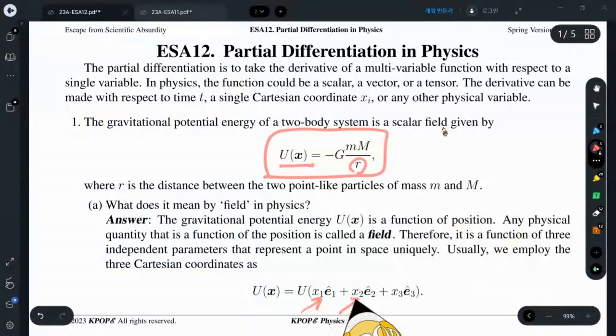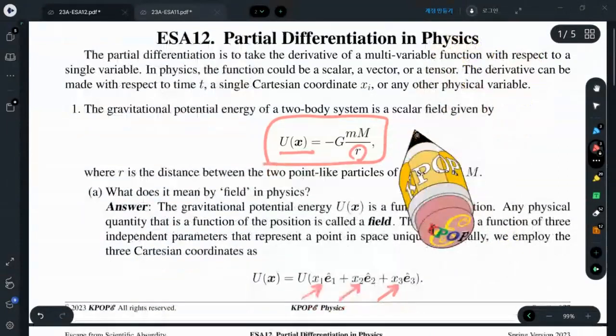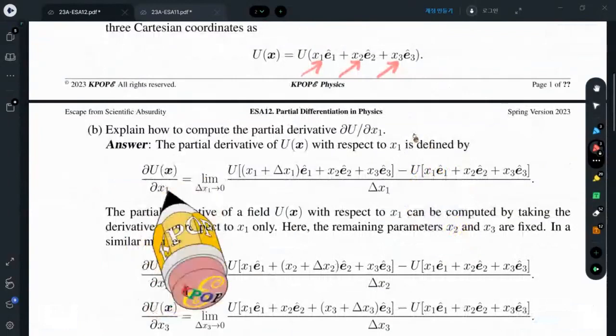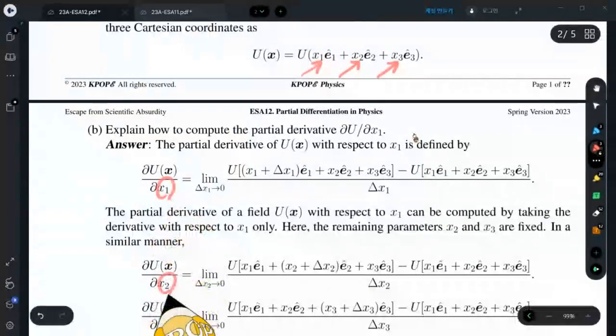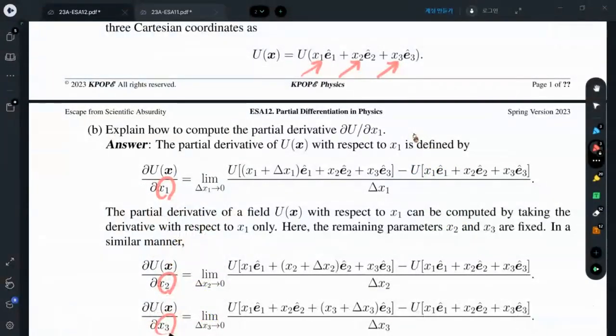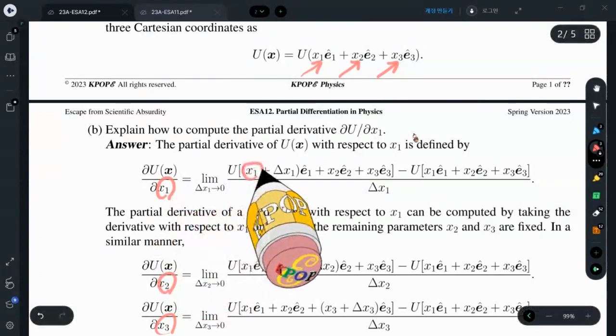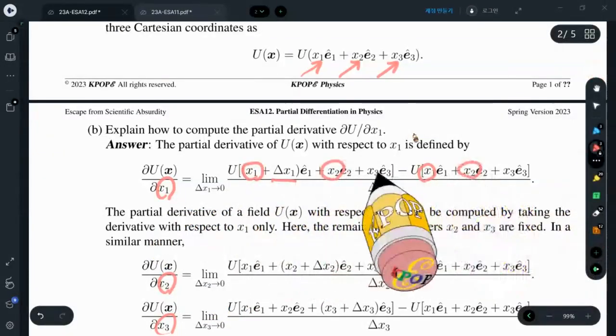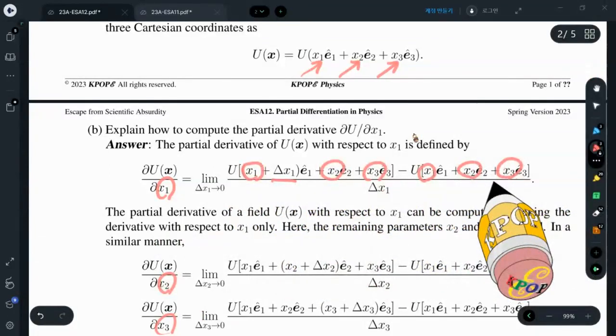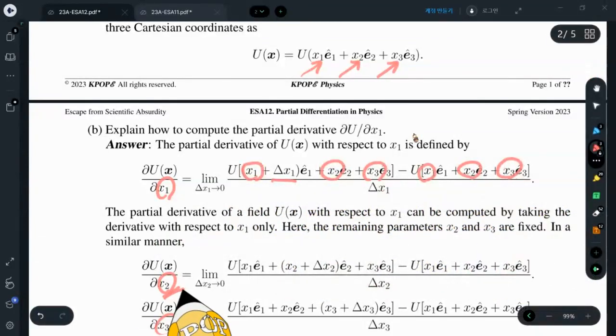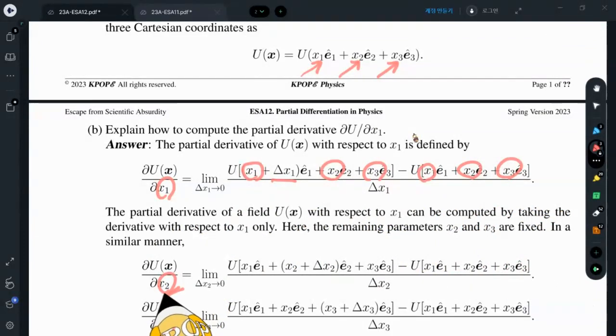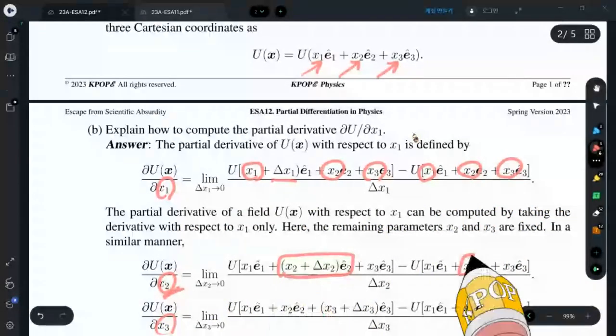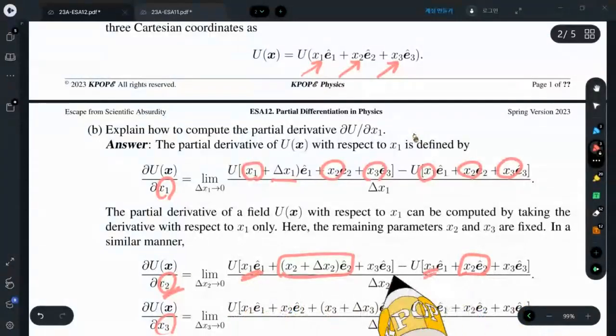They are x1, x2, and x3. The partial derivative with respect to x1 and x2 and x3 are exactly the same as the normal derivative except that only x1 varies and x2 and x3 are invariant. In the case of partial derivative with respect to x2, only x2 varies and x1 and x3 are invariant.